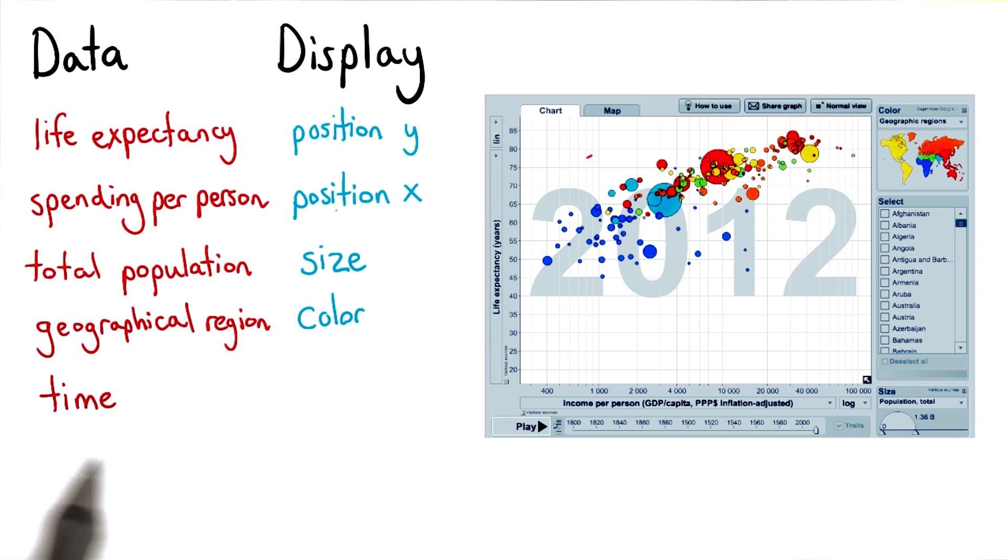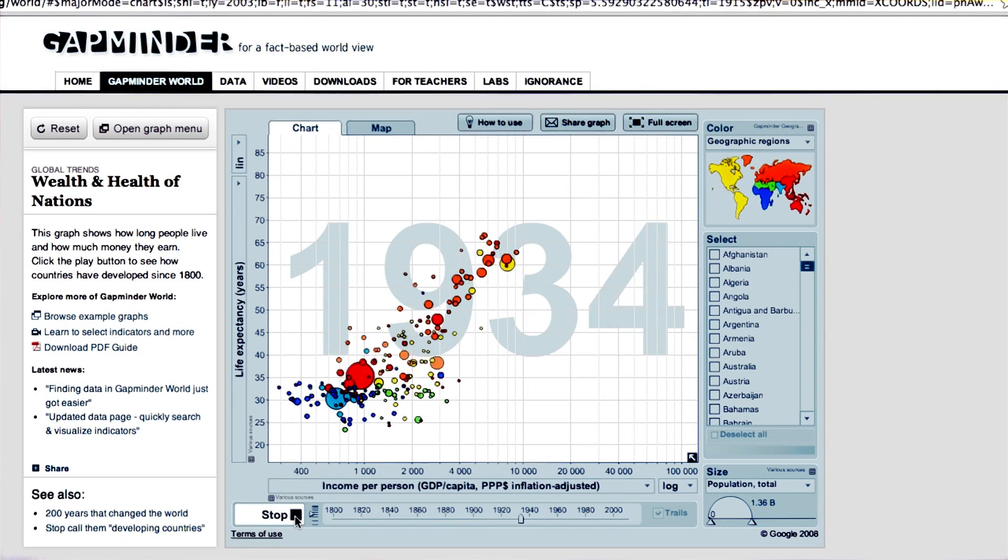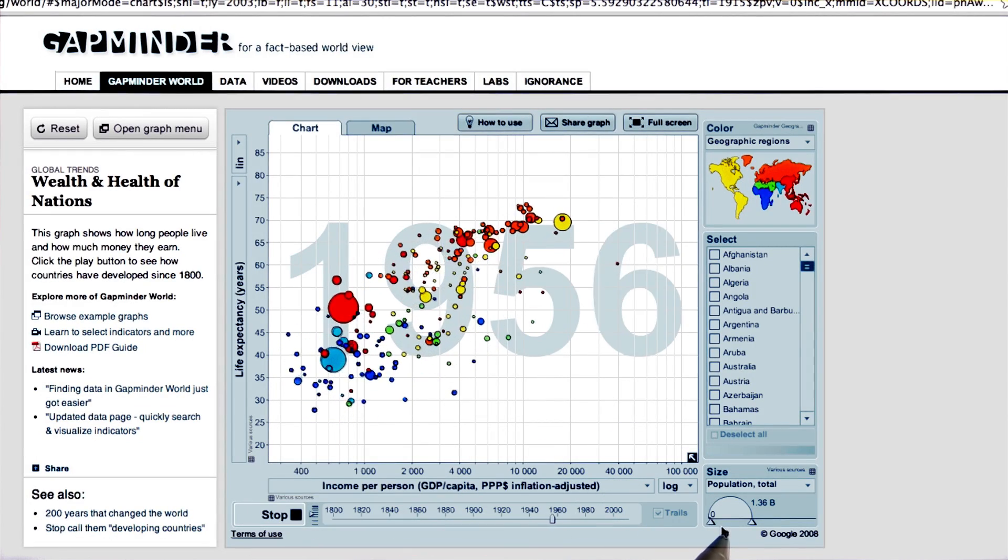Instead, time is animated through individual frames in our visualization. The quick succession of these frames shows change in life expectancy, income per person, and population over time.